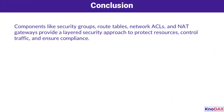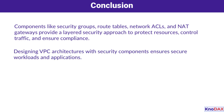To summarize, designing VPC architectures with components like security groups, route tables, network ACLs, and NAT gateways is critical for creating secure workloads and applications. These tools provide a layered security approach, ensuring your resources are protected, traffic is controlled, and compliance requirements are met. I hope this video has provided valuable insights into how to secure your workloads and optimize your AWS environment. Thank you for watching.